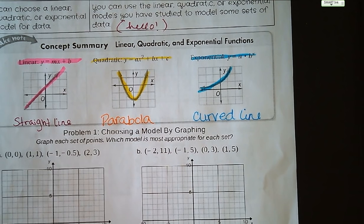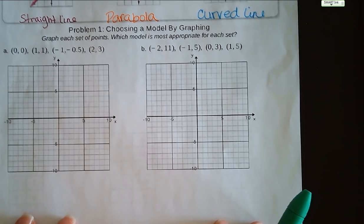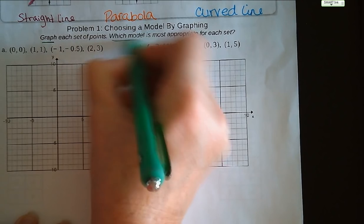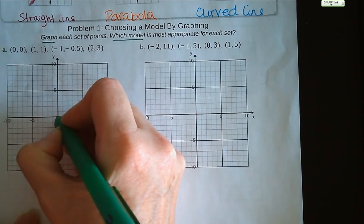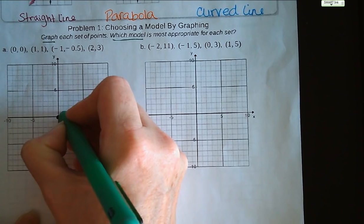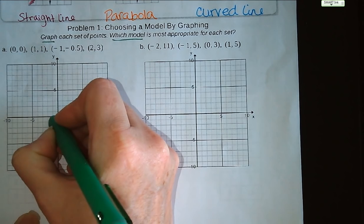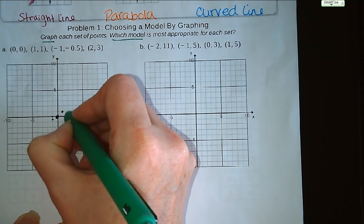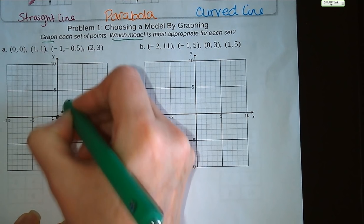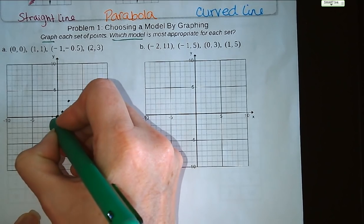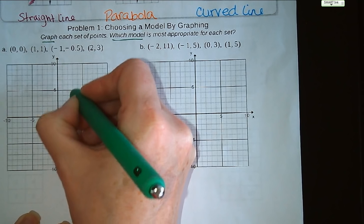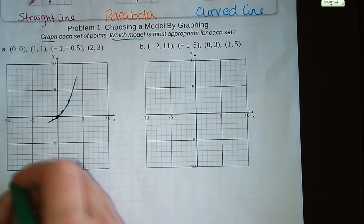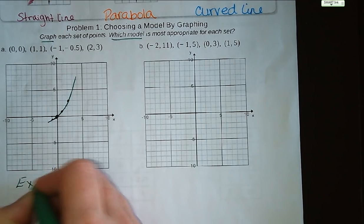All right, so choosing a model by graphing. We're going to graph our data and pick which form best fits that data. Mrs. Zerzo is graphing. She has a point at (0, 0), a point at (1, 1), a point at (-1, -0.5), and a point at (2, 3). If you look at it, it's slowly growing. So that's going to be exponential. We don't have that mirrored image.